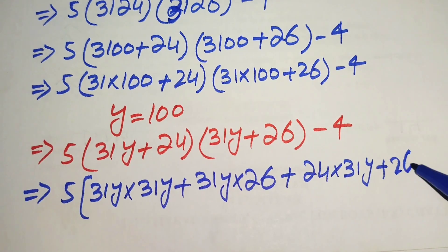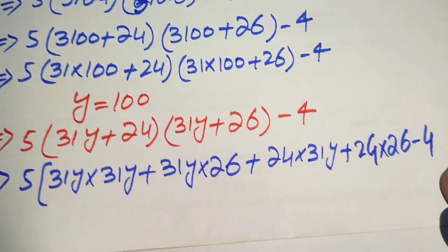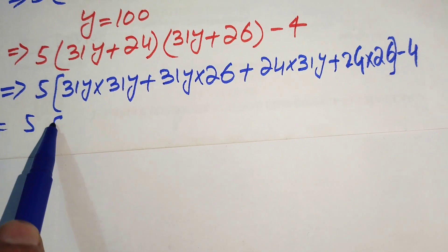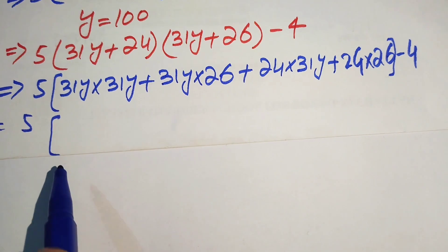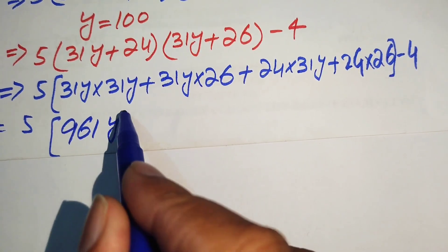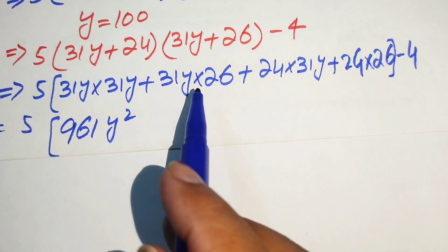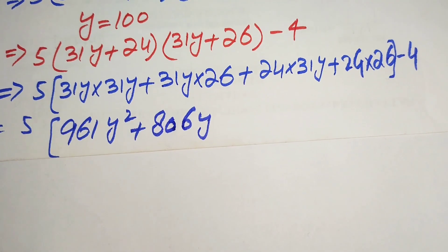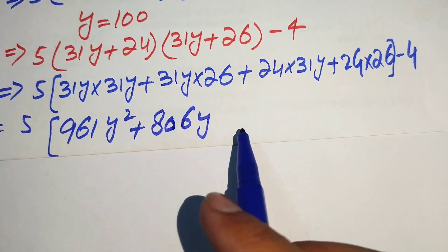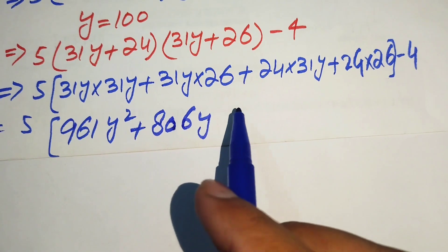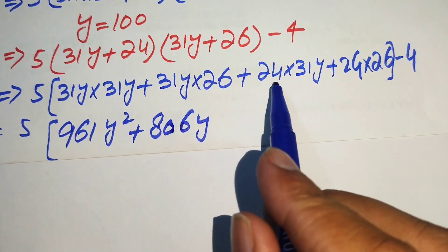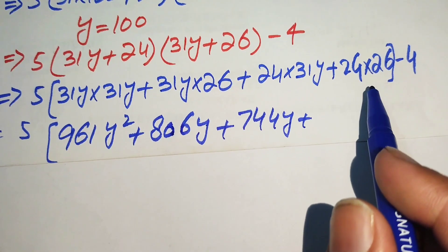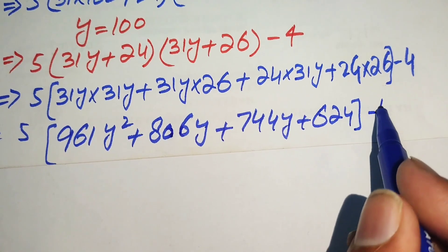Expanding gives us: 31y times 31y plus 31y times 26, plus 24 times 31y, plus 24 times 26, minus 4. Calculating each term: 31y times 31y equals 961y squared, 31y times 26 equals 806y, 24 times 31y equals 744y, and 24 times 26 equals 624, minus 4.